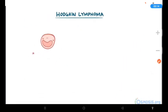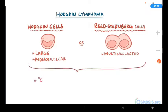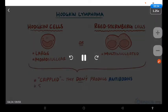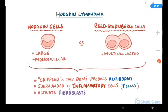In Hodgkin lymphomas, neoplastic cells are large mononuclear cells called Hodgkin cells, or multinucleated cells called Reed-Sternberg cells. Classically, Reed-Sternberg cells are two fused cells forming a large cell with two nuclei, which looks like owl eyes. These neoplastic cells are considered crippled because they don't produce antibodies like a normal B-cell. They are usually surrounded by non-neoplastic inflammatory cells, mostly T-cells, attracted by chemokines. The neoplastic cells also activate fibroblasts, which make collagen, as well as eosinophils.